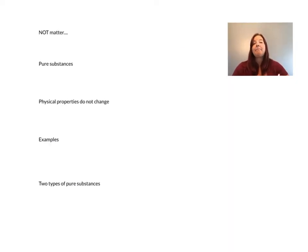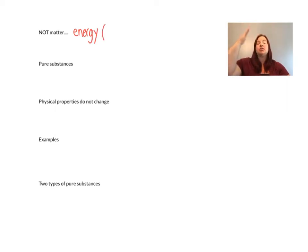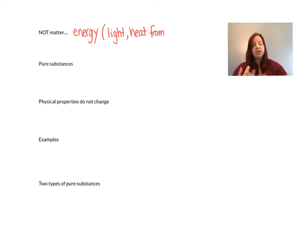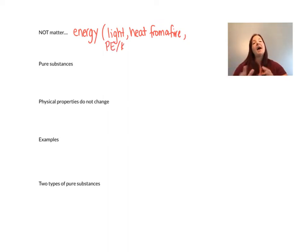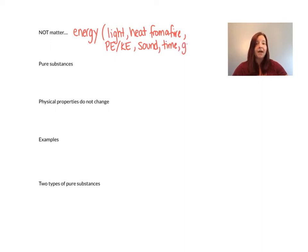We said that matter is anything that has mass and takes up space. So what are some things that are not matter? We have to stop and think about what things are not made of atoms. A good example is energy — the light energy coming into my room is not made up of atoms, so it is not matter. Most forms of energy — kinetic energy, potential energy, the heat energy off a fire — are not matter. The sound from my voice is not matter. Time is not matter, and gravity is not matter. None of those things are made up of atoms.